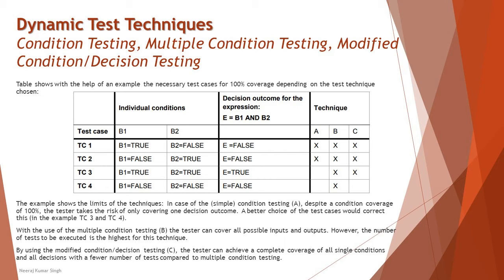Starting with condition testing, technique A: the tester designs test cases with the objective of covering the true and false outcomes of each individual condition. With an appropriate choice of test data, 100% condition coverage can be achieved, but not full coverage of the decision outcomes. For example, testing TC1 (B1 true, B2 false) and TC2 (B1 false, B2 true) achieves 100% condition coverage, but this reveals the limitation of this technique.